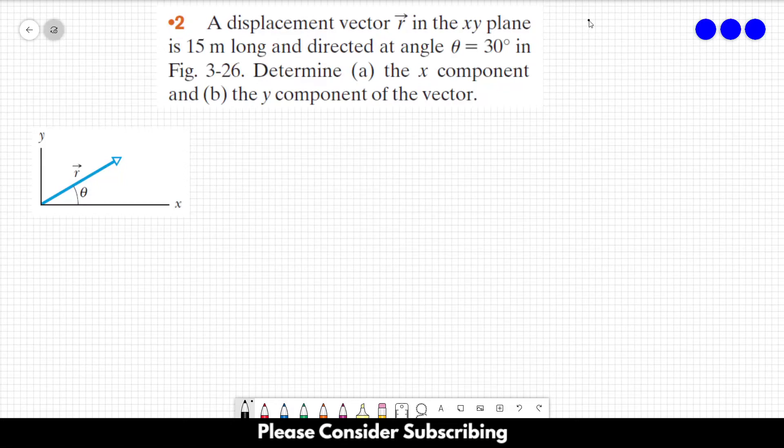Number 2, a displacement vector R in the xy plane is 15 meters long and directed at angle theta equals 30 degrees. In this figure over here.